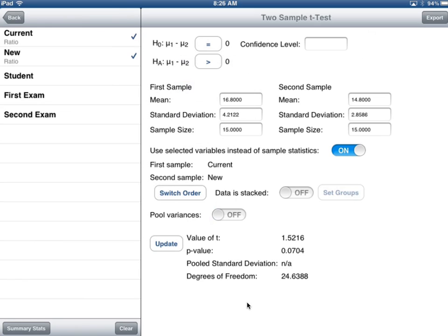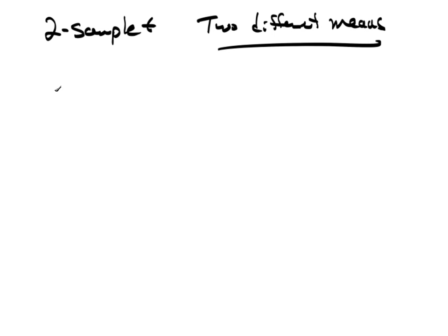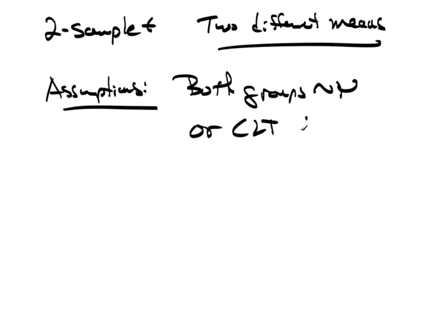So that's the process that we follow to determine or to compare two independent means when the assumptions are satisfied so we can use a two-sample T. Now, just to recap very briefly all what happened here because a bunch just happened. So for a two-sample T, we're taking a look at two different means. That's what we're comparing, two different means. The assumptions are both groups distributed and normal or CLT applies for both, which is incidentally the exact same assumptions for an F-test.